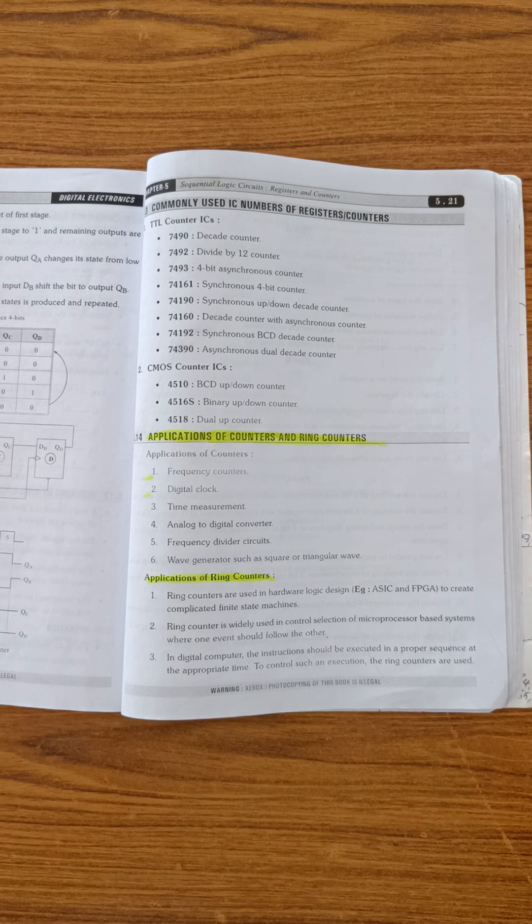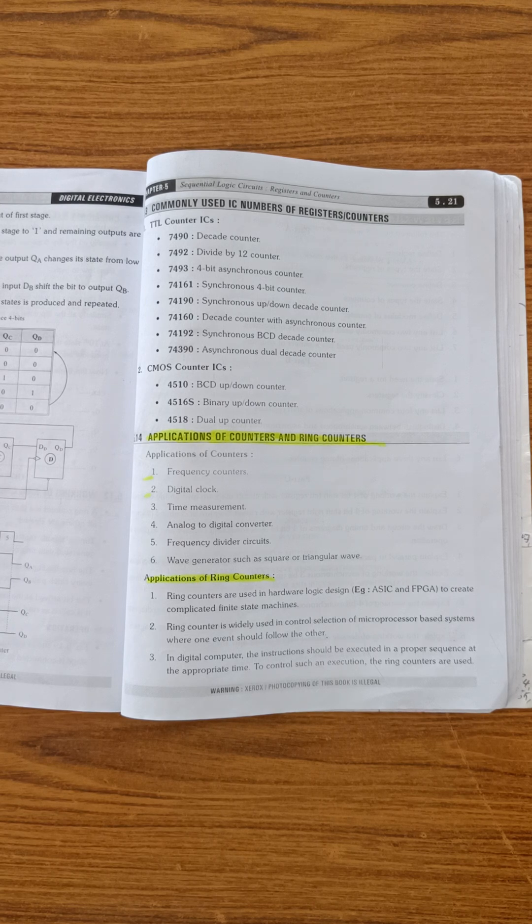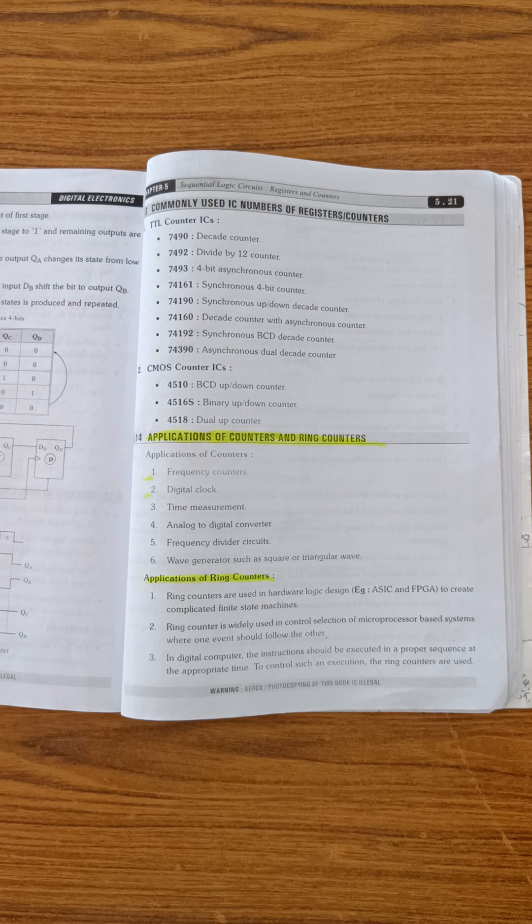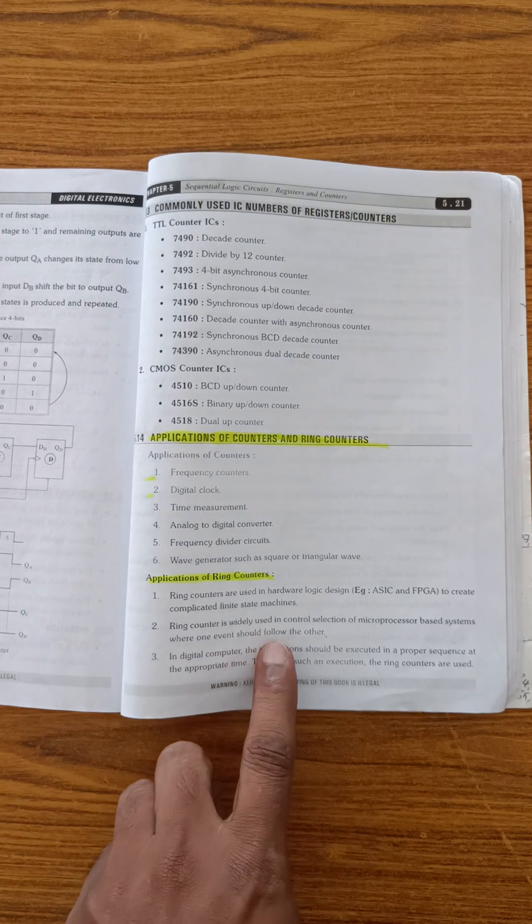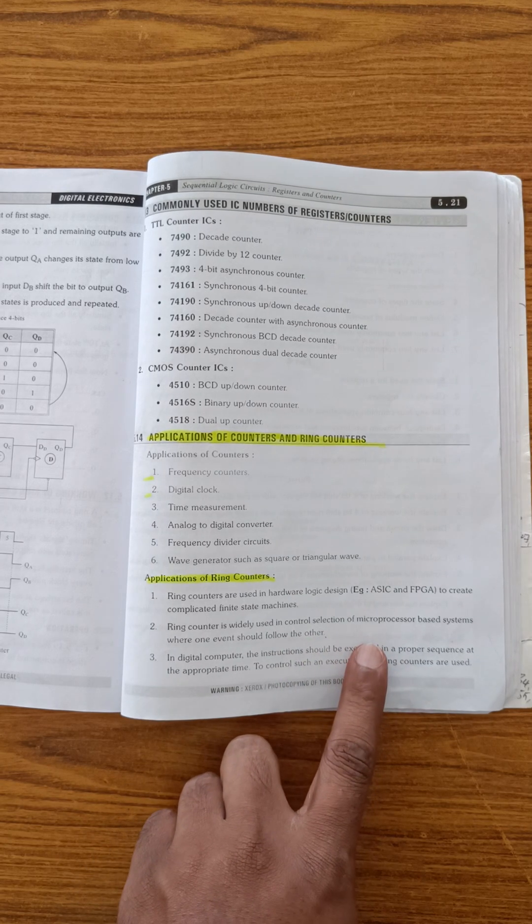FPGA, Field Programmable Gate Array, to create complicated finite state machines. Next one, ring counter is widely used in control selection of microprocessor based systems.